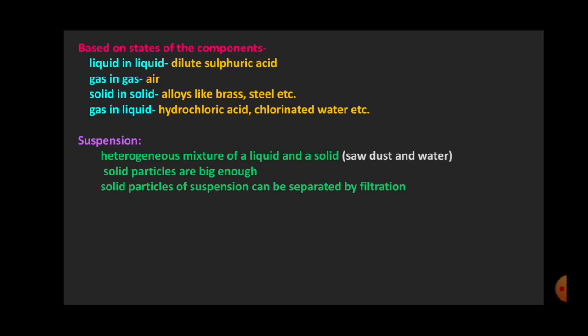Next is suspension. Suspension is a type of mixture where solid particles are dispersed in a liquid. Such a heterogeneous mixture is called a suspension. The solid particles are big enough that they form two phases — the liquid solvent and the solid solute. These solid particles can be separated by filtration using a filter paper, which has pores that allow the liquid through and retain the solid particles, thus separating both phases.